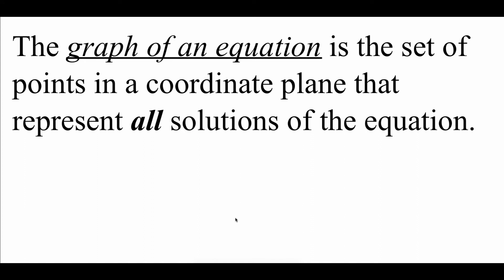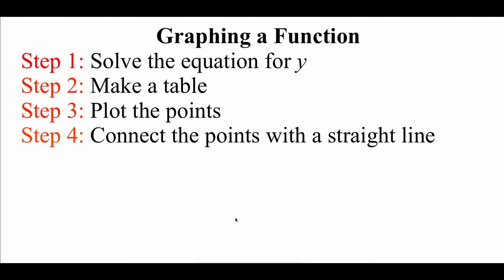The graph of an equation is the set of all points on our coordinate plane that represent all solutions of that equation. There are four steps for graphing a function. Step one: solve the equation to get y alone — function form. Step two: use that equation to create a table of values, which gives us ordered pairs. Step three: plot those points on the coordinate grid. Step four: connect all the plotted points with a nice straight line.